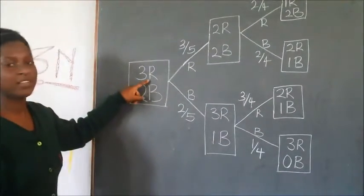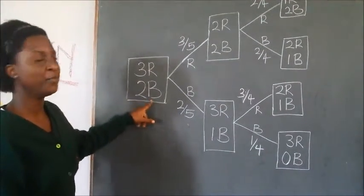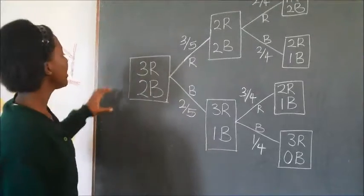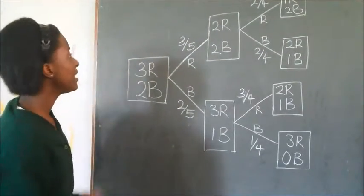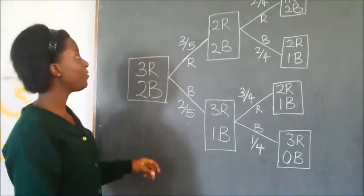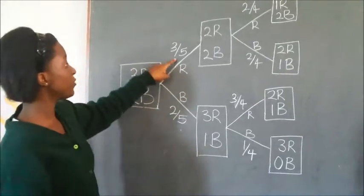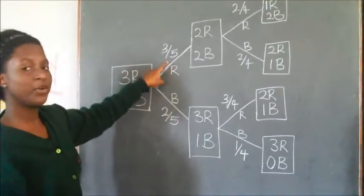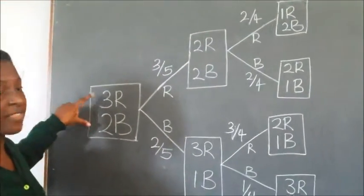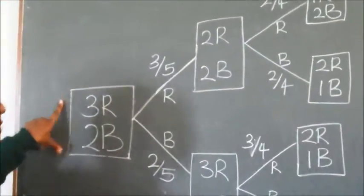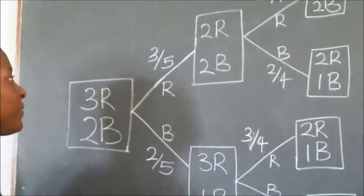R stands for red and B stands for blue. So in total there are five sleepers. The probability of picking a red sleeper is three out of five, because there are three red sleepers and the total number is five. So it's three out of five.